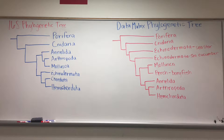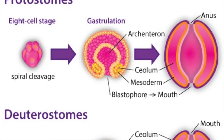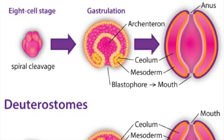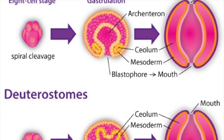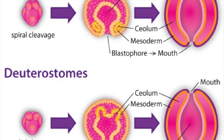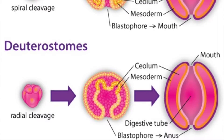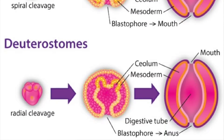More specifically, the 16S tree we constructed in class groups organisms together based on whether they are protostomes, deuterostomes, or neither. Hemichordata is in the clade representing deuterostomes, and the most closely related taxa are echinoderms and chordates.